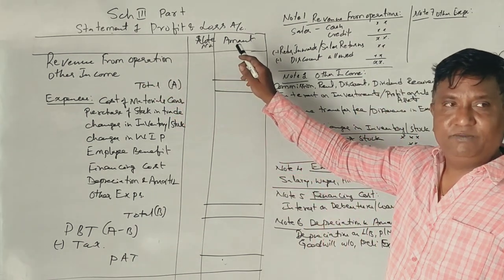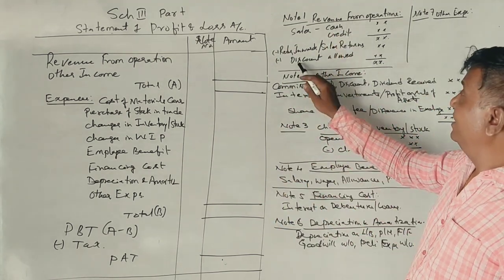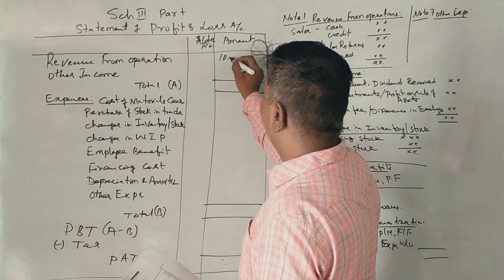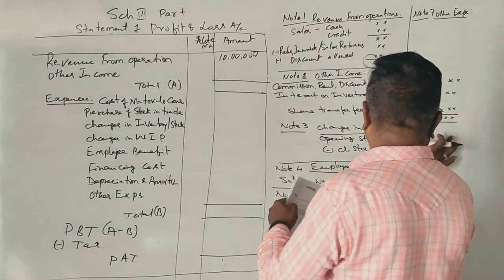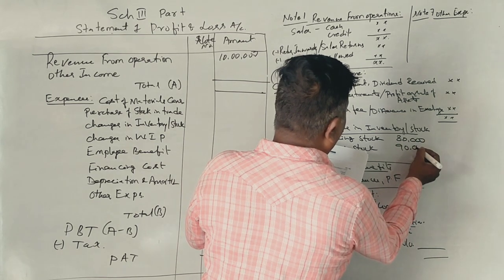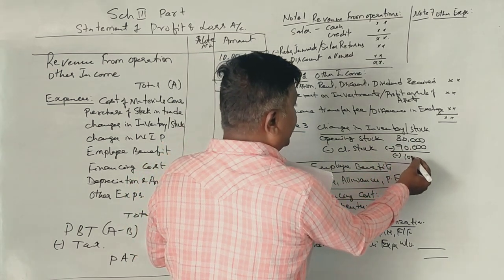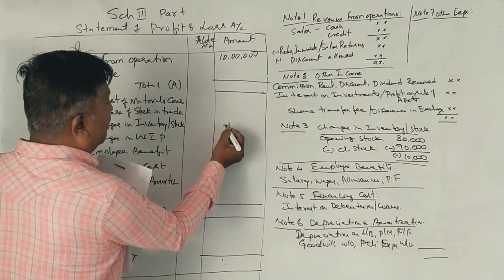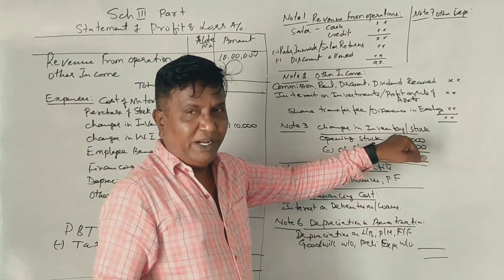Now, revenue from operation. What is it? Direct sales, credit sales, discount, sales returns, etc. Sales amount, direct, 10 lakhs. That means, 10,00,000. Stock of goods, opening stock, 80,000. Closing stock is 90,000. If the opening stock minus closing stock is 10,000, this will be 10,000. Changes in inventory, 10,000. That means, closing stock is 10,000.